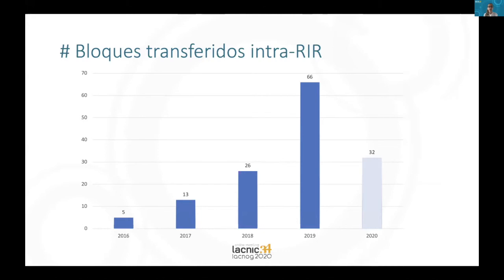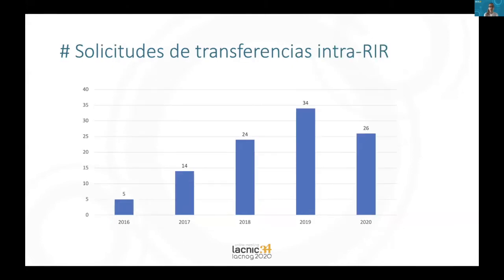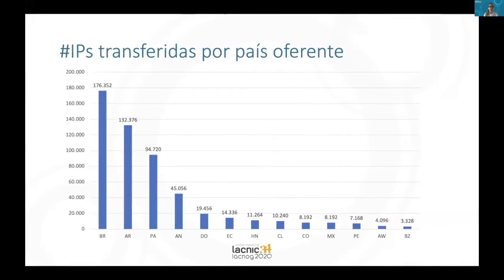The highest amount was in 2019. For 2020, we still don't have the final number — it might seem to be lower. But importantly, there are still many transfers that are in the process of being analyzed. It is therefore interesting to see the trend, namely the number of requests for intra-IRR transfers. This shows clearly the annual increase, and it is likely that for 2020 this will continue growing, as we can see in this bar chart.